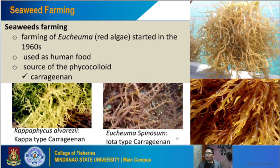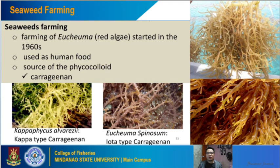Next is seaweed farming, which mainly involves the farming of Eucheuma or red algae, started in the 1960s in the Philippines. It is used as human food and as a source of phycocolloid, particularly carrageenan, which is an extract from Eucheuma. The photos show Kappaphycus alvarezii and Eucheuma spinosum — representing kappa-type and iota-type carrageenan respectively.